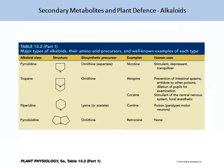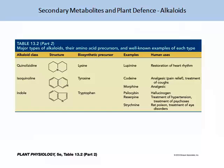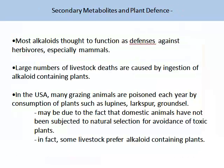Nicotine is perhaps one of the most famous alkaloids. Another example is morphine, which is used as an analgesic and comes from the alkaloid class isoquinolines. The most common functional role of alkaloids is as a defence mechanism against herbivores, especially mammals. Large numbers of livestock deaths are caused by the ingestion of alkaloid-containing plants. In the US, many grazing animals are poisoned each year by the consumption of plants such as lupins, larkspur, and ground seal.